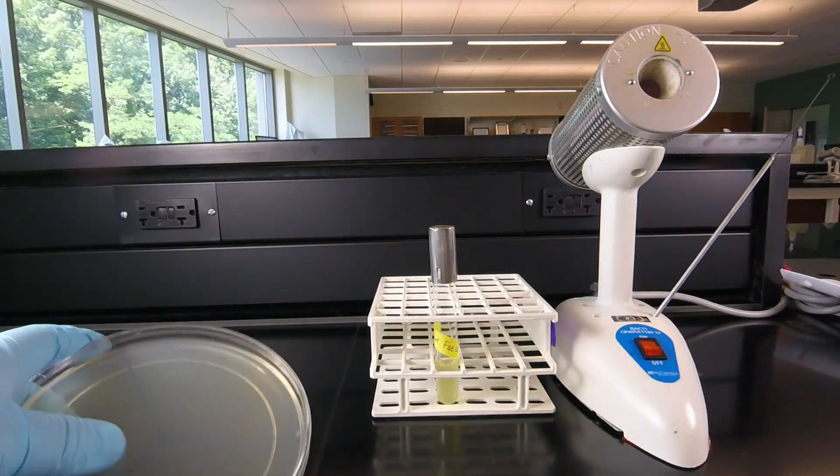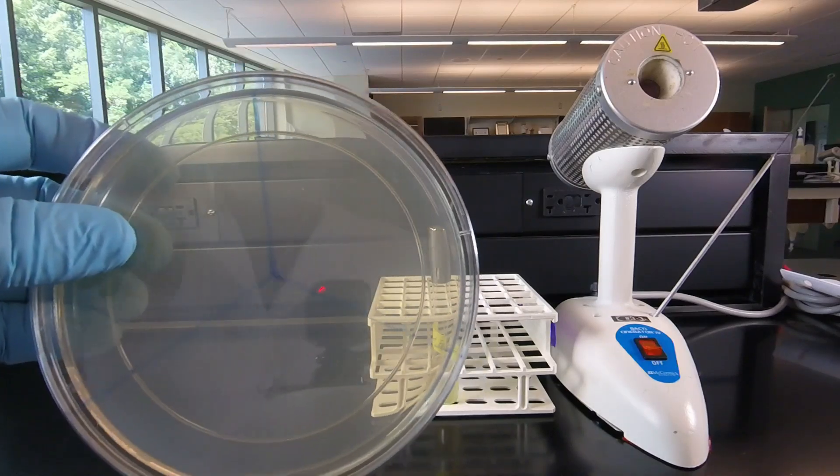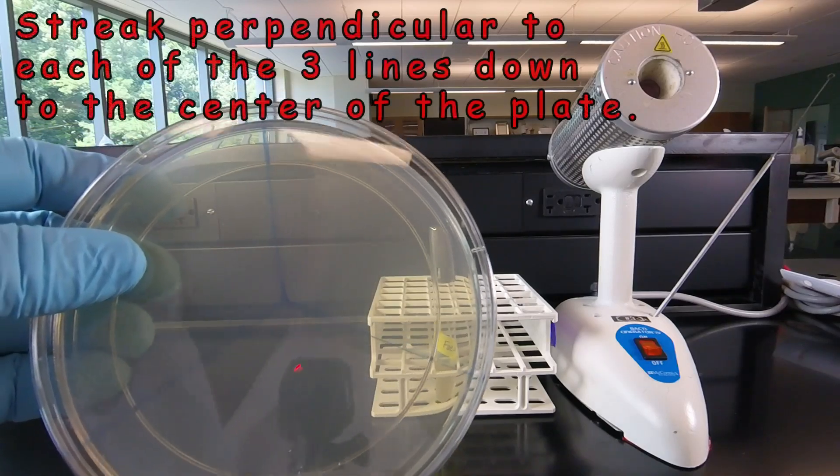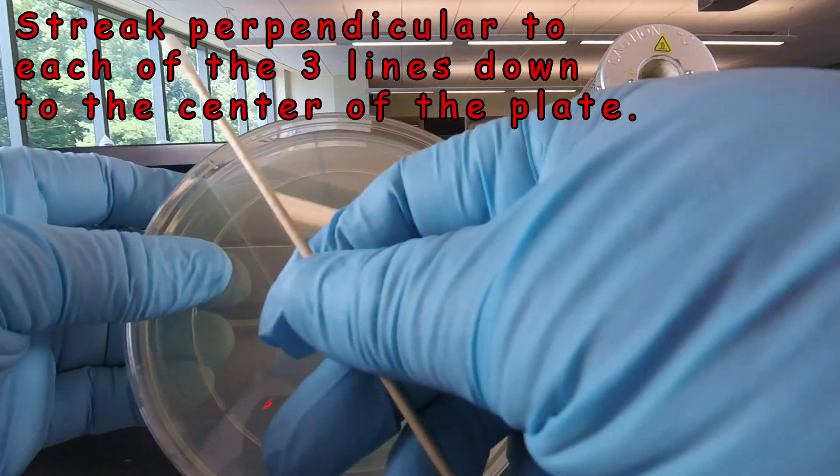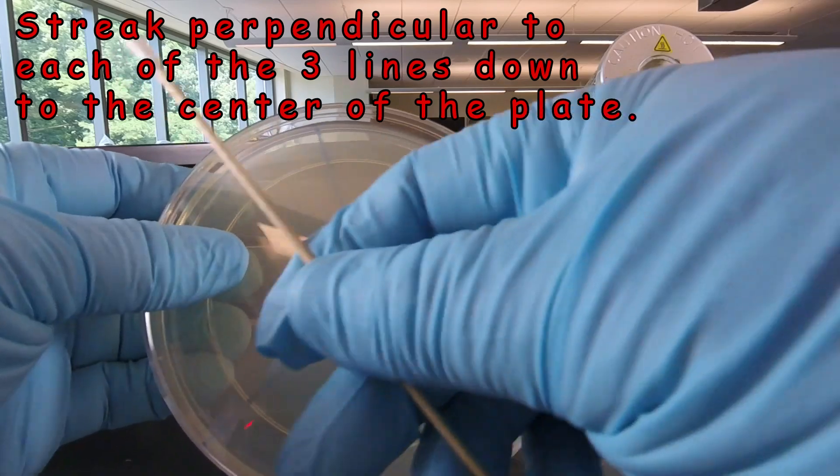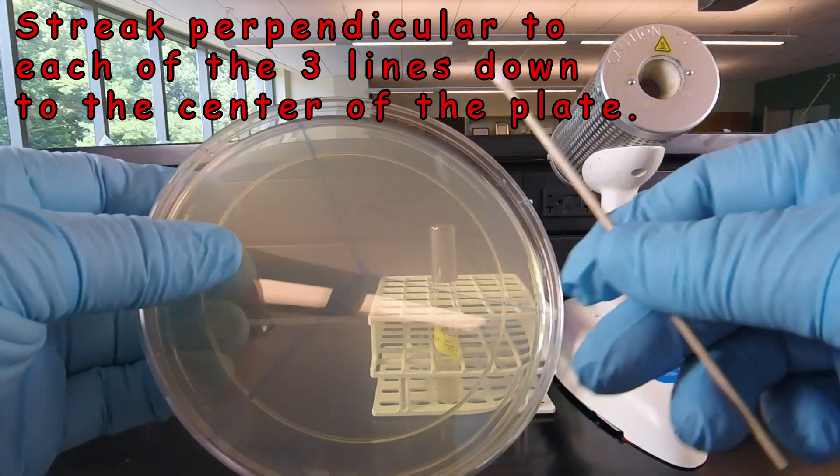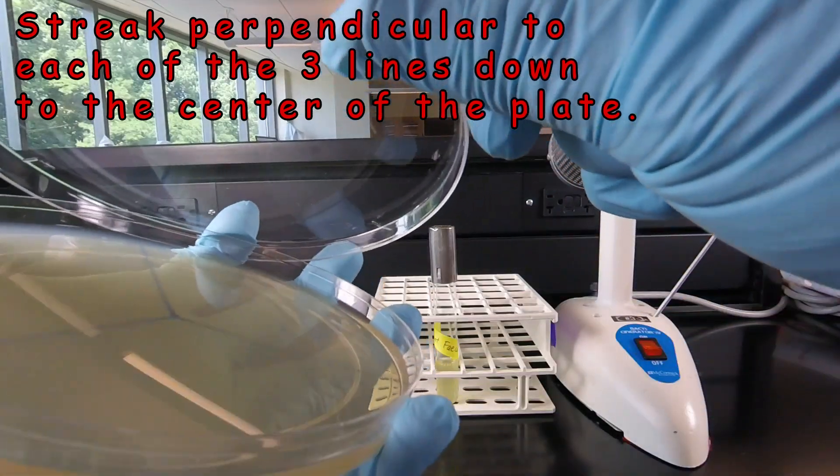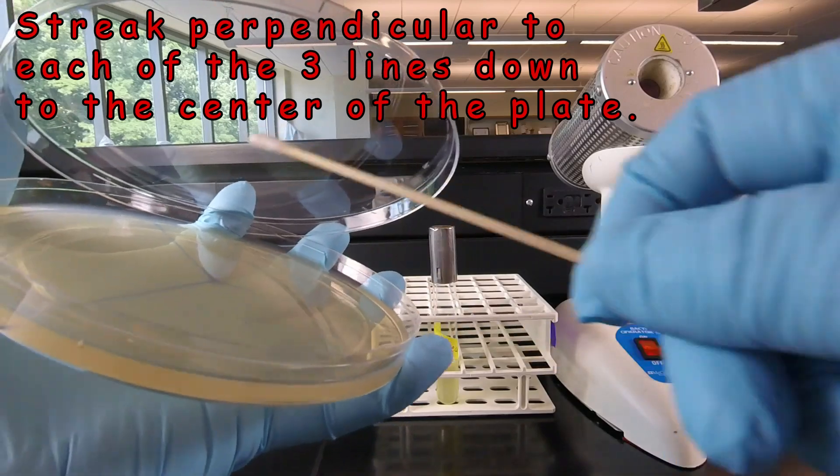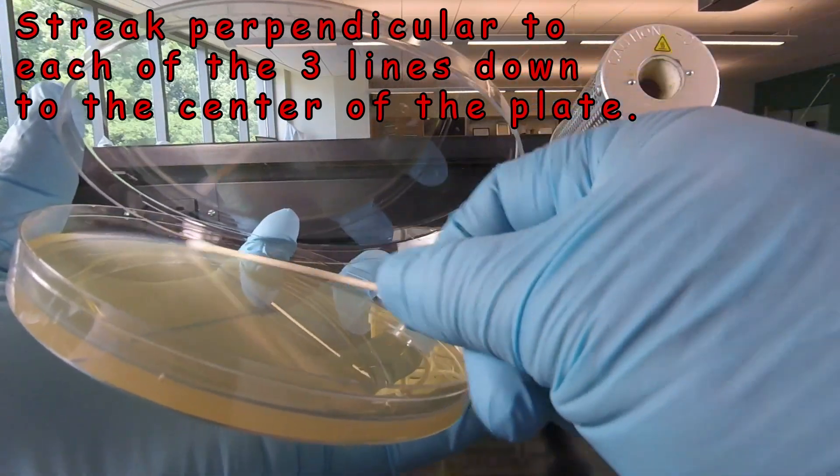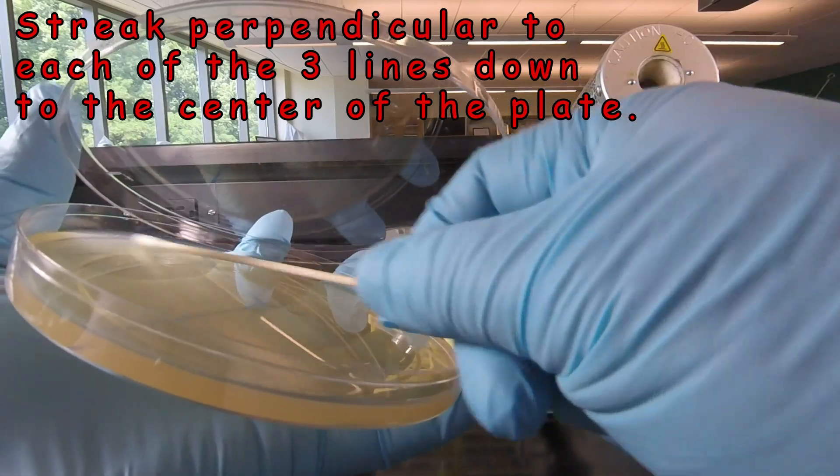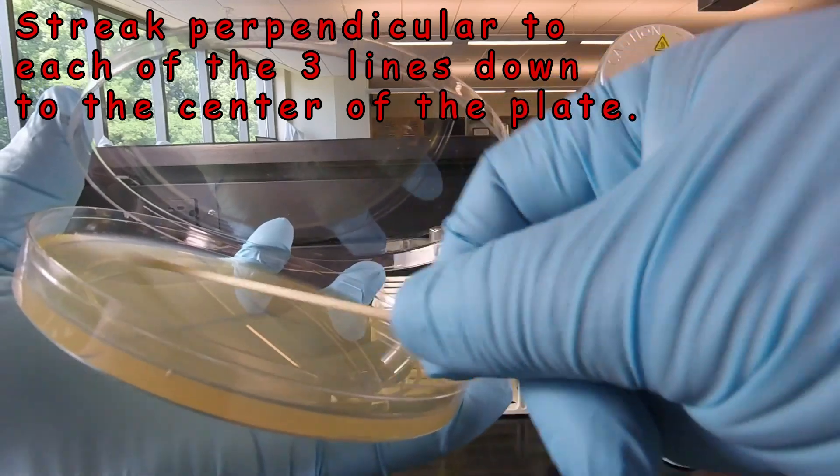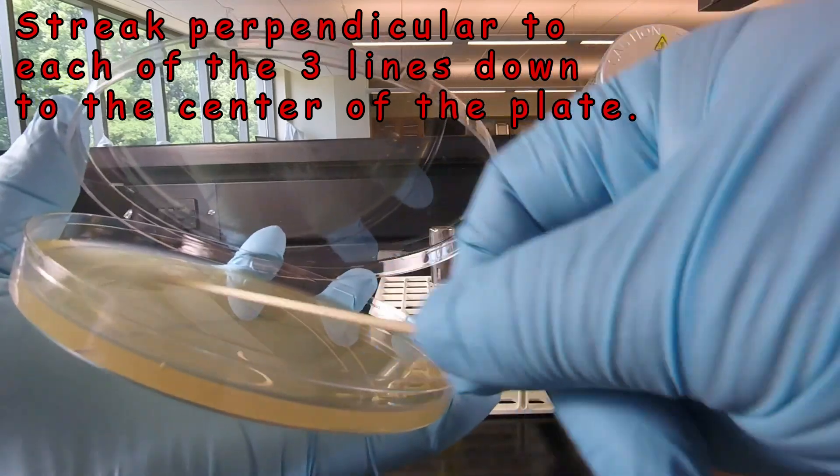Now we're ready to streak the plate. We've divided our plates into thirds, as you'll see in the illustration in your lab manual to help guide our streaking, and we're going to streak perpendicular to each line, going all the way to the edge of the plate and overlapping the lines, working our way down to the center. So we lift the lid, and we're going to go perpendicular to this line. Notice I'm going all the way to the edge of the plate, and I'm overlapping the lines until I hit the center of the plate.